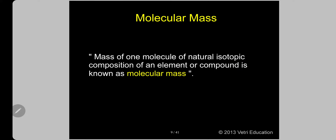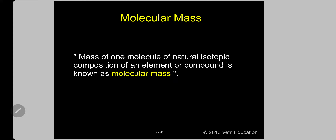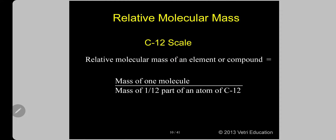We have discussed the molecule in detail. Now let me go to molecular mass. Just as with atoms, it is not possible to isolate a single molecule and weigh it accurately. The mass of one molecule of natural isotopic composition of an element or compound is known as molecular mass. Since a molecule is very, very small and microscopic, we speak of it relatively using the term relative molecular mass.